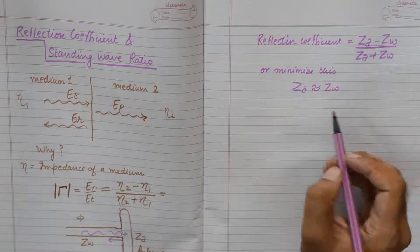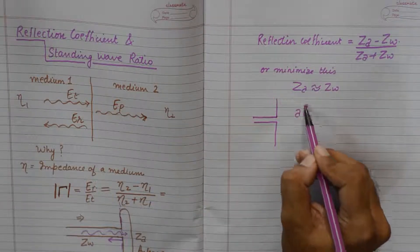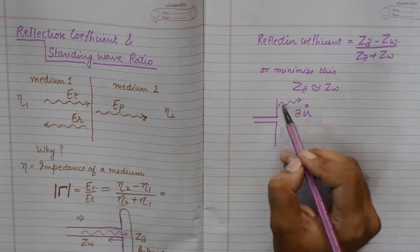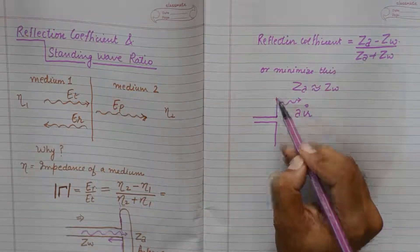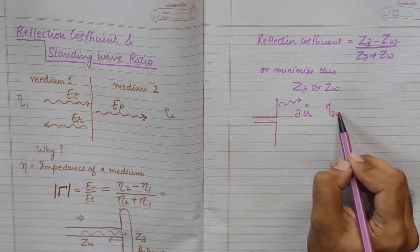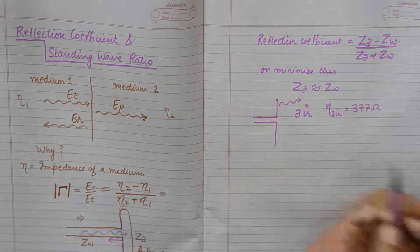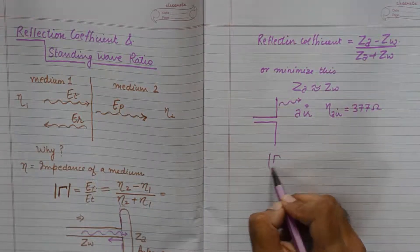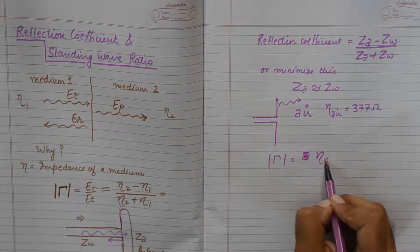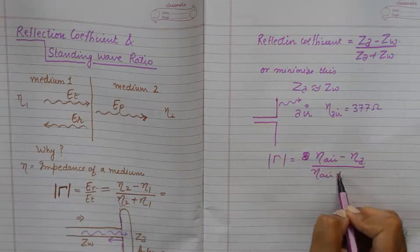And the second point of interface is antenna and air. Whenever an antenna radiates its energy into the air, it is a classical example of energy transmitting from one medium to the other. But we know that the ETA for air, intrinsic impedance of air, is fixed which is 377 ohm. So in order to avoid reflection coefficient, this becomes impedance of air minus impedance of antenna upon impedance of air plus impedance of antenna.